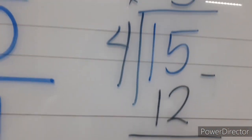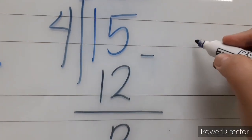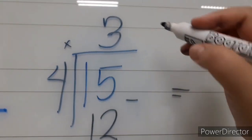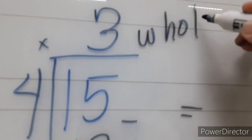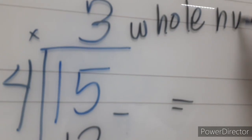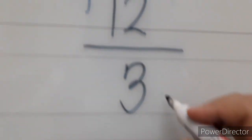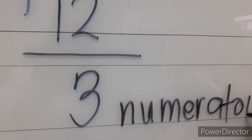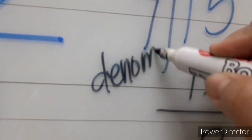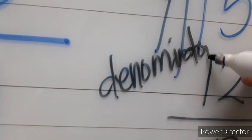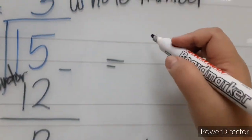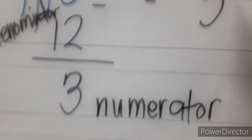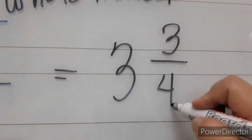15 minus 12 is 3. So the mixed number form — this will become the whole number. This is the new numerator. And our divisor is always the denominator, or we simply copy the denominator. So we now have 3 and 3 fourths.